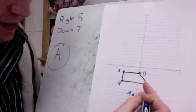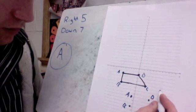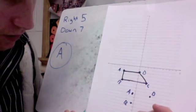Now, we just have to get C on there. Right 5, 1, 2, 3, 4, 5, down 7. 1, 2, 3, 4, 5, 6, 7. There we see.